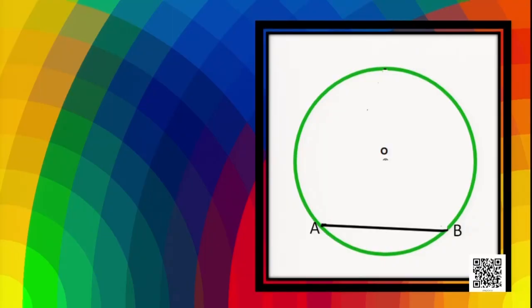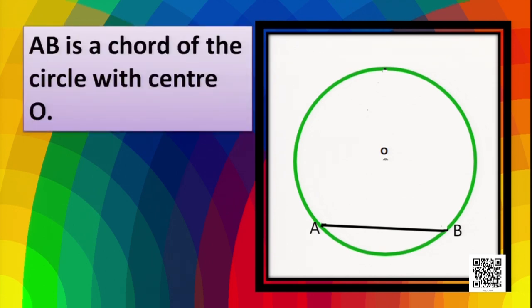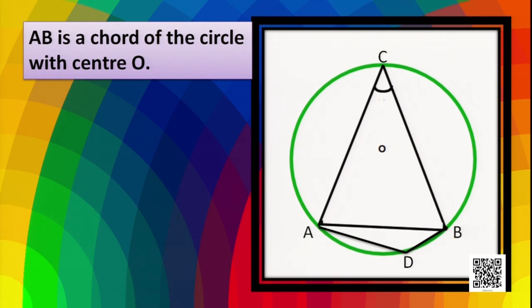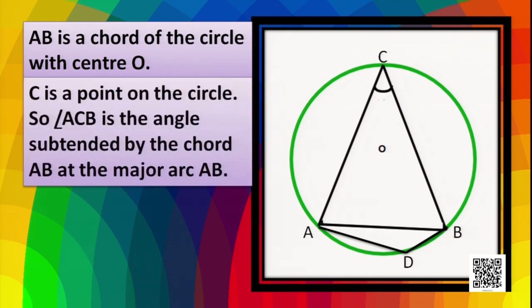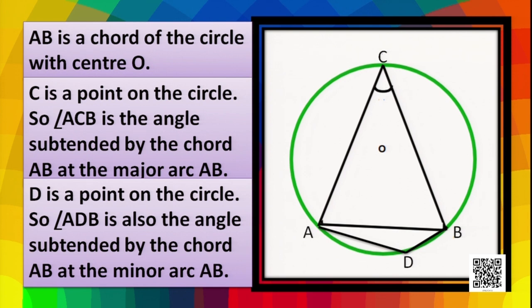Now let's come to chord. Here the figure shows that AB is a chord of the circle with center O. Apart from AB, we have two more points C and D on the circle. Angle ACB is called the angle subtended by chord AB at the major arc, because point C is on the major arc. Similarly, angle ADB is the angle subtended by chord AB at the minor arc.